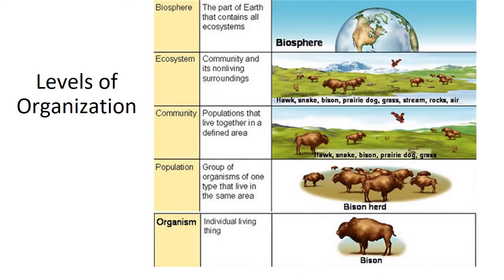Here are the levels of organization. An organism is also called an individual — you only have one of them. In this picture we have one bison all by himself. A population means more than one of the same kind, so here we have a whole herd of bison — many of them in one picture.